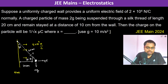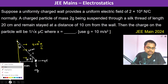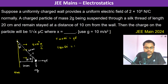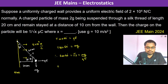From the free body diagram: T cos 60° = qE and T sin 60° = mg. Therefore, tan 60° = mg divided by qE, which gives tan 60° = √3 = mg / qE.